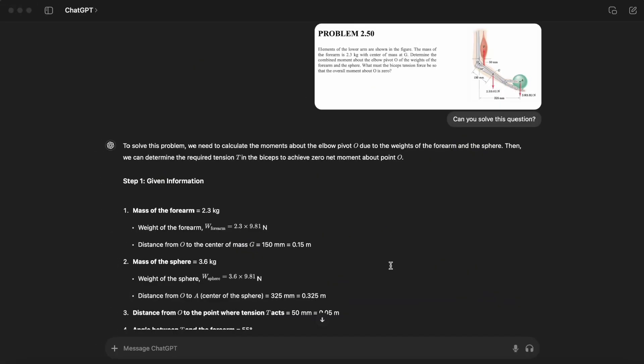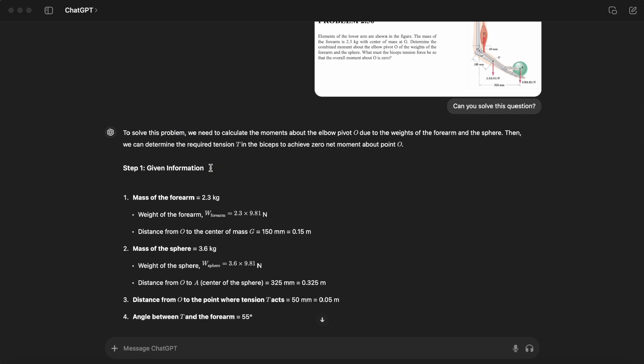I opened up ChatGPT and attached the question with the figure. I used two different prompts. The first one, I just asked, can you solve this question? The first step was going over the givens: the mass of forearm 2.3. It tried to find the weight of the forearm. The distance to the center of mass is 150.